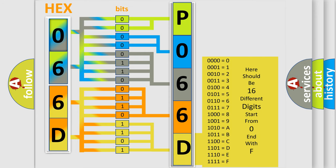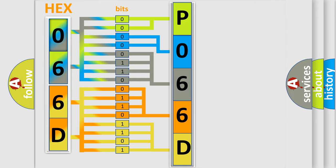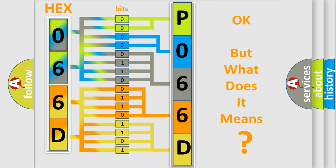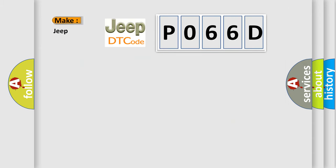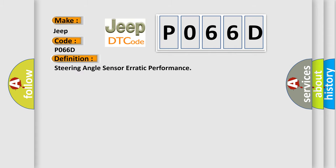We now know in what way the diagnostic tool translates the received information into a more comprehensible format. The number itself does not make sense to us if we cannot assign information about what it actually expresses. So, what does the diagnostic trouble code P066D interpret specifically for Jeep car manufacturers?